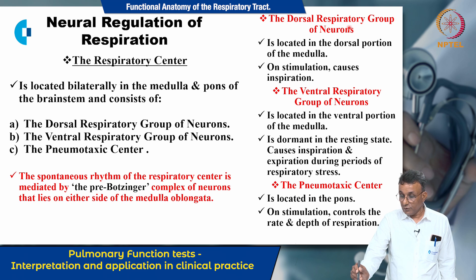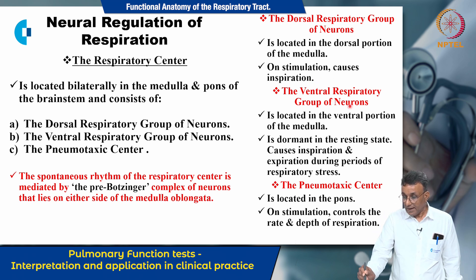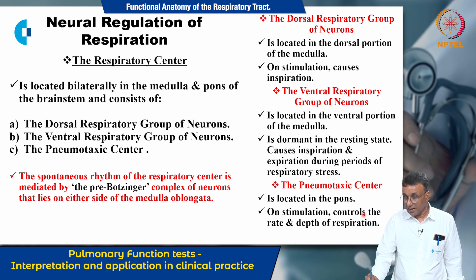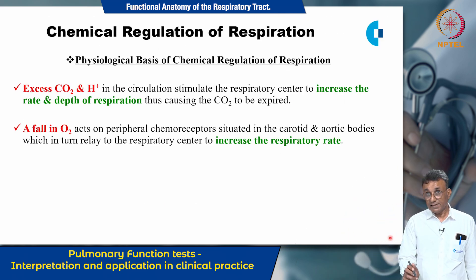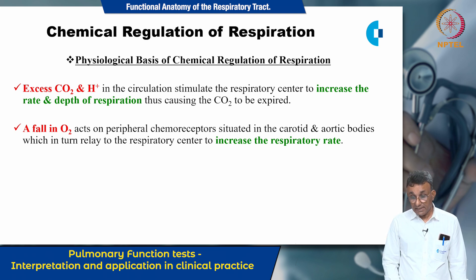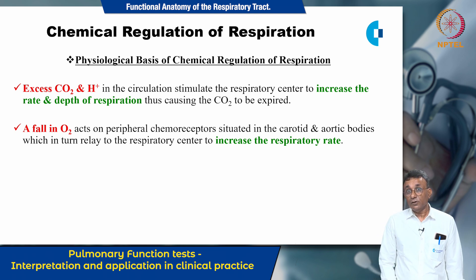The dorsal respiratory group of neurons is located in the dorsal portion of the medulla and on stimulation principally causes inspiration. The ventral respiratory group is located on the ventral side of the medulla, normally dormant, and causes both inspiration and expiration during periods of respiratory stress. The pneumotaxic center is located in the pons and controls the rate and depth of respiration. With regards to chemical regulation: excess CO2 and hydrogen ions or a fall in oxygen stimulate the respiratory center. Excess CO2 and H+ increase the rate and depth of respiration to expire CO2, while a fall in O2 acts on peripheral chemoreceptors in the carotid and aortic bodies, relaying signals to increase respiratory rate.